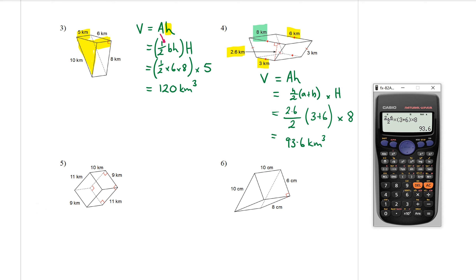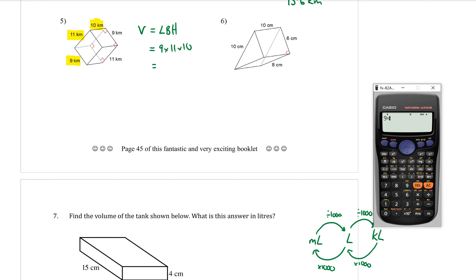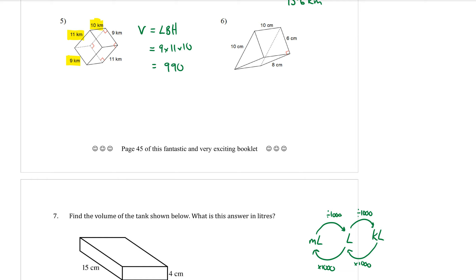Question five — have a think about what kind of prism this is. It's back to a rectangular prism, so the formula is V equals LBH. Looking at the rectangle on the side, it has dimensions 11 and 9, and the distance going back is 10. Those are the three dimensions. Multiplying in any order: nine times eleven times ten gives 990 kilometres cubed.